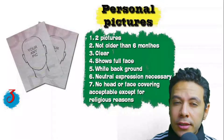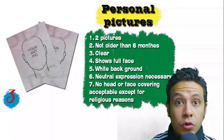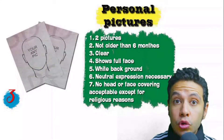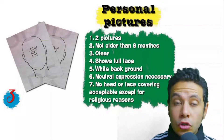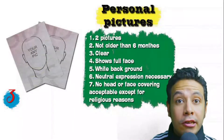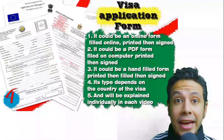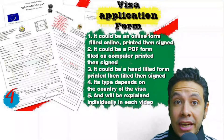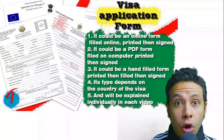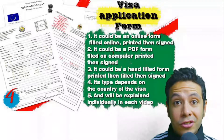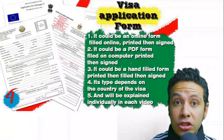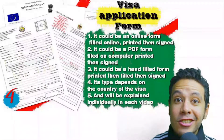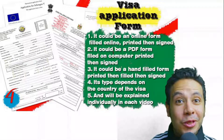For personal pictures, you typically need two, though sometimes one or three are required. They must not be older than six months, should clearly show your full face, preferably with a white background, and with a normal neutral expression. No head or face covering is acceptable except for religious reasons. For the visa application form, generally one copy is needed, but sometimes two or three are required. Many countries now offer an online platform where you can fill the form digitally and then print and sign it.